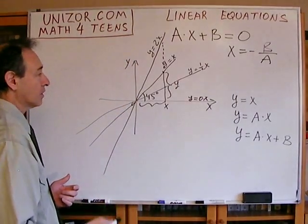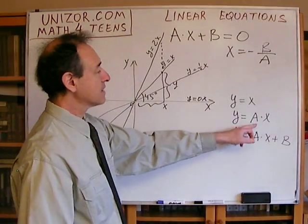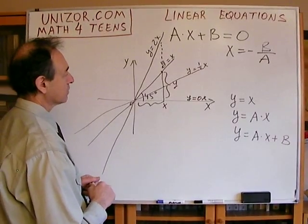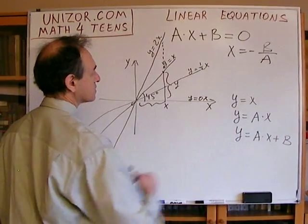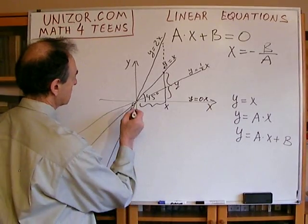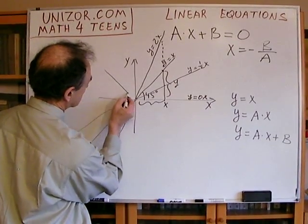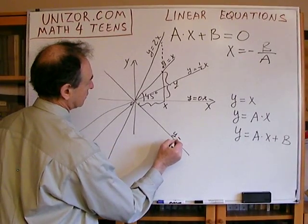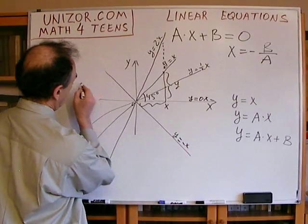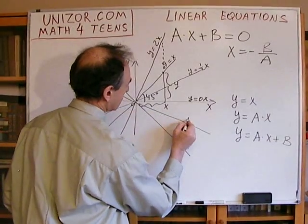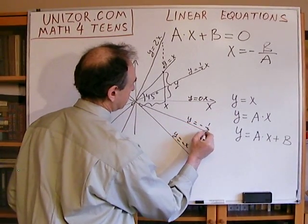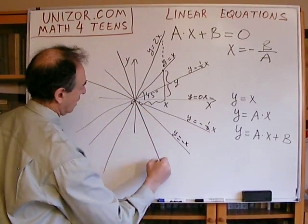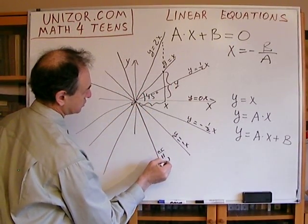Let's move further to negative a. If a equals minus one, then y equals minus x, which bisects this angle on the other side. Similarly, y equals minus one half x is less steep, and y equals minus 2x is steeper. So we have all the different angles depending on the value of a.